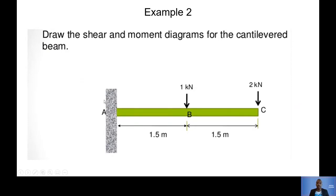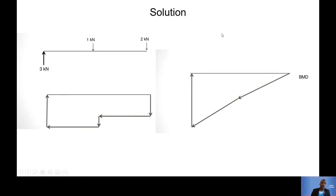Now this example is a fixed cantilever beam - when it's fixed it has both an upward reaction and a moment reaction. We have 1 kN in the middle and 2 kN at the end. The total upward reaction is 3 kN. For the shear force diagram we start with 3 kN up, sustained at 3, then go down 1 at the first load giving us 2.